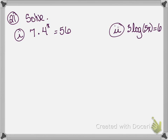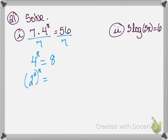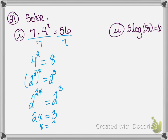Number 21: solving equations. We have 7 times 4 to the x power equals 56. First we divide both sides by 7, leaving 4 to the x power equals 8. Now I rewrite 4 as 2 squared, so 2 squared raised to the x power. And 8 can be rewritten as 2 to the third. So I get 2 to the 2x equals 2 to the third. Since the bases are the same, I can drop the base: 2x equals 3, so x equals 3/2.